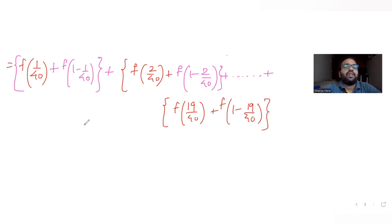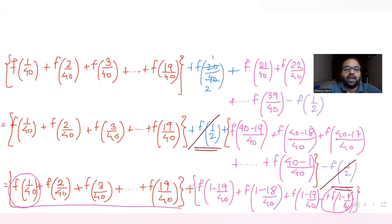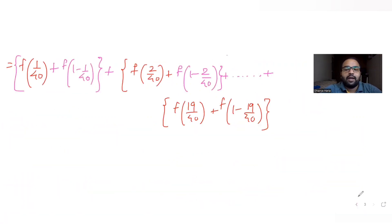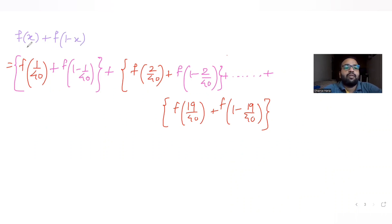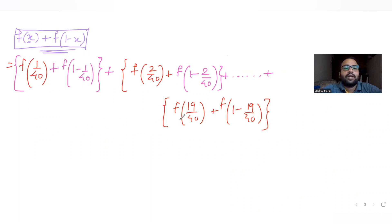The entire expression simplifies to the sum of f(x) + f(1 - x), where x takes values from 1/40 to 19/40 — giving us 19 such pairs. So first, let's find the value of f(x) + f(1 - x). Once we have that, we can substitute it to get the final answer.